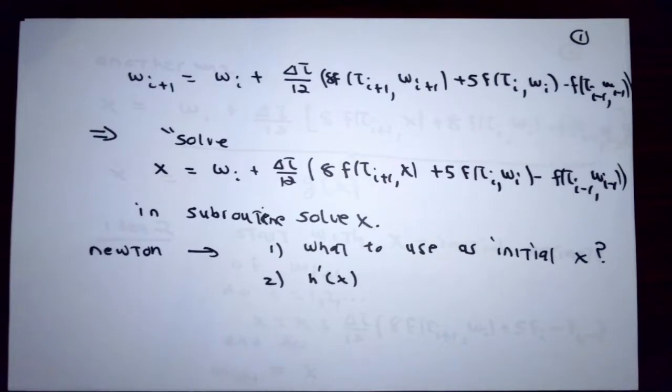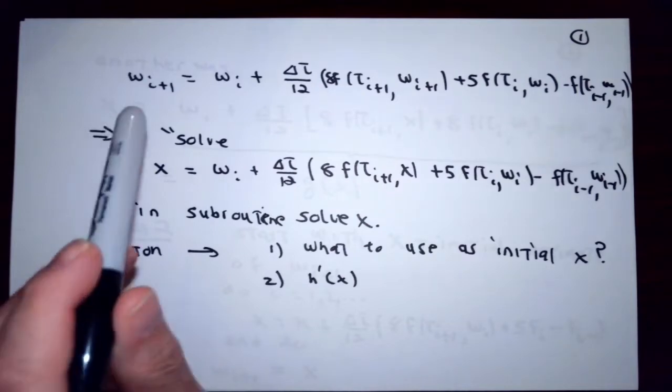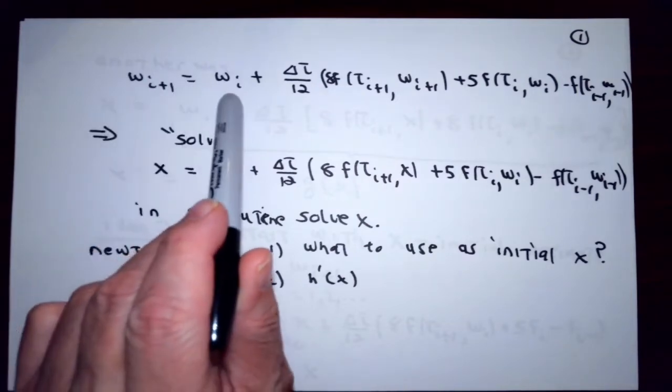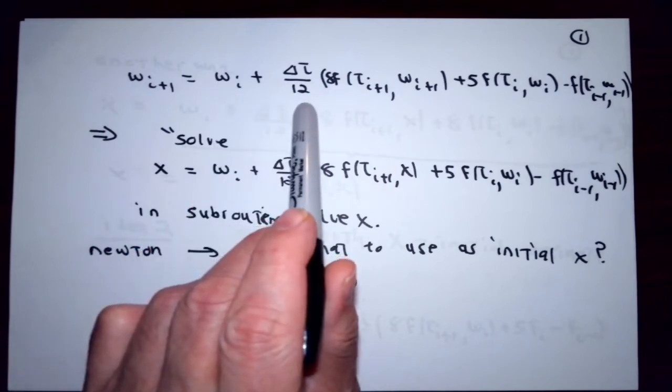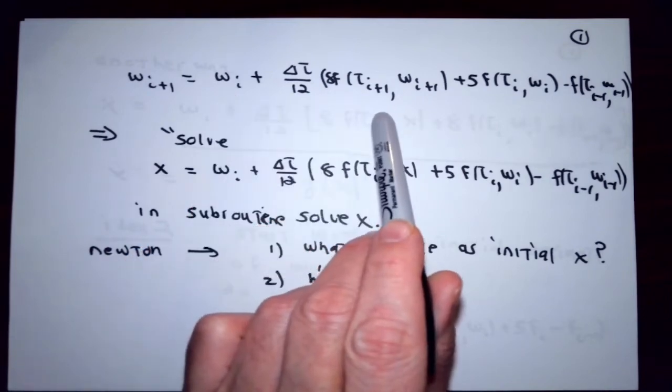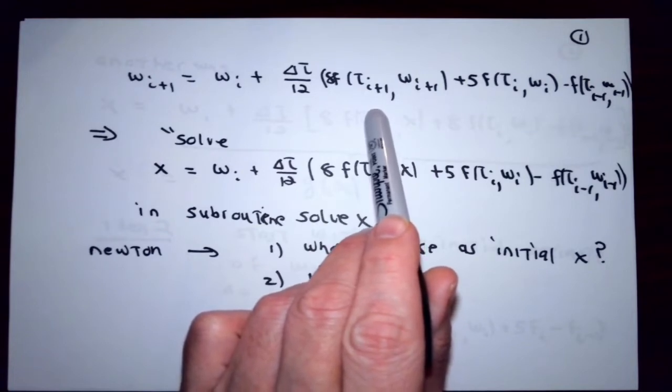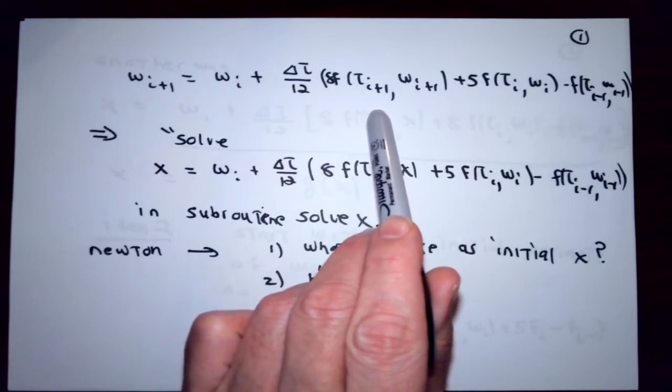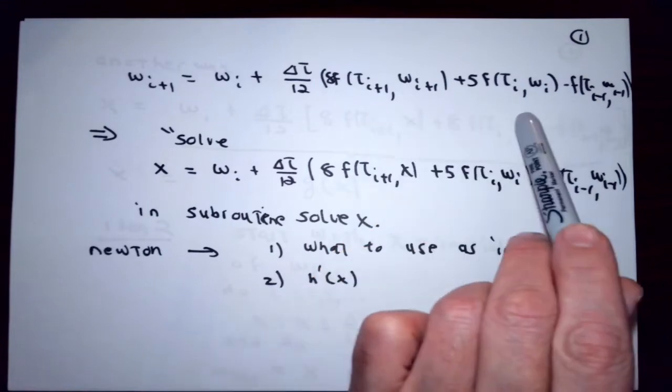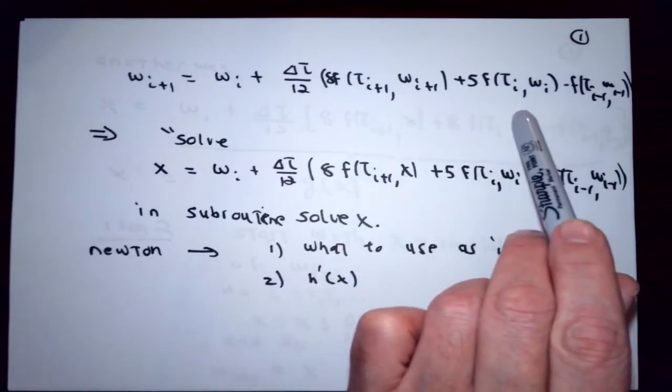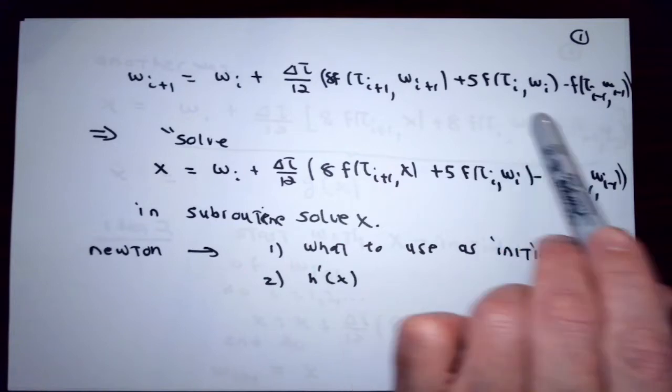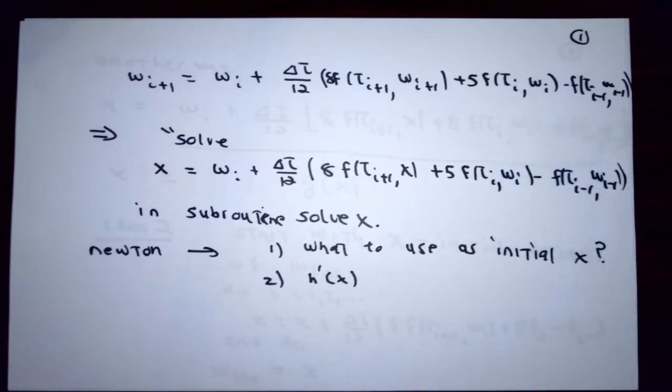After figuring out the interpolating polynomial and integrating it, it developed that our first real implicit method is w_{i+1} = w_i + Δt/12 multiplied by the quantity 8 times the f value at t_{i+1}, w_{i+1} plus 5 times the f value at t_i, w_i minus the f value at t_{i-1}, w_{i-1}.